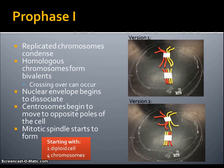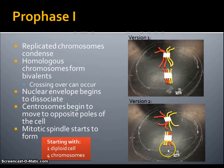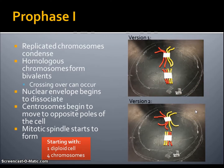The first step in meiosis is prophase I. This is when replicated chromosomes condense and homologous chromosomes join together to form bivalents, which we can see here in version I and version II as well. Prophase I is also when crossing over can occur, when the nuclear envelope begins to dissociate, and when the centrosomes begin to move to opposite poles of the cell and the meiotic spindle begins to form.